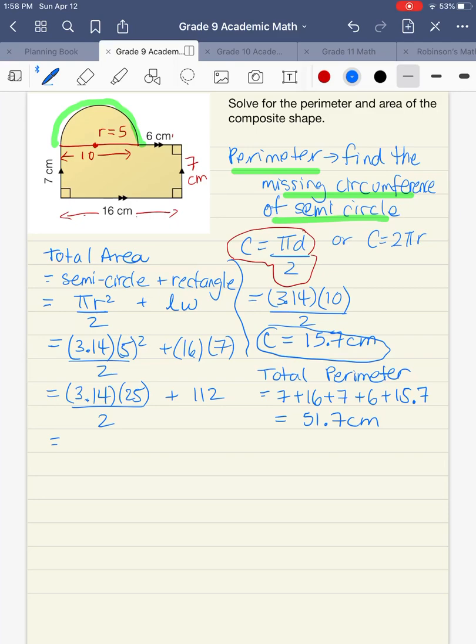And 3.14 times 25 divided by 2 gives us 39.25, and then we're adding 112 to that. Okay, so we want to round to one decimal place for our final answer. But notice that right there, I'm still keeping two decimal places. So you always try to save all of your rounding until the end, where it is possible and where it makes sense to do this. So if we add 39.25 plus 112 and round that to one decimal place, we end up with approximately 151.3 centimeters squared.